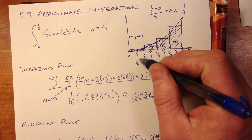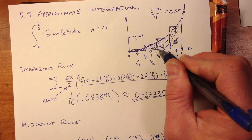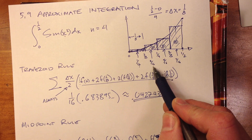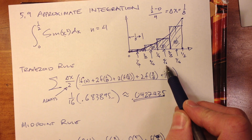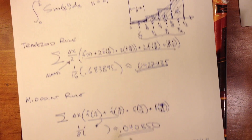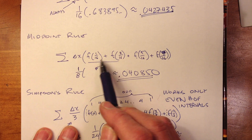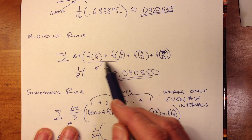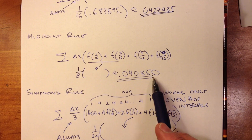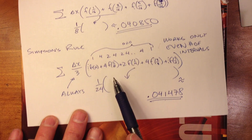For the midpoint rule, I've drawn rectangles. To find each midpoint we average the two interval boundaries. Halfway between zero and one eighth is one sixteenth; halfway between one eighth and one fourth is three sixteenths; then five sixteenths and seven sixteenths. Evaluating f at each midpoint — sine of (1/16)² and sine of (3/16)² and so on — then multiplying by delta x of one eighth gives approximately 0.04085.